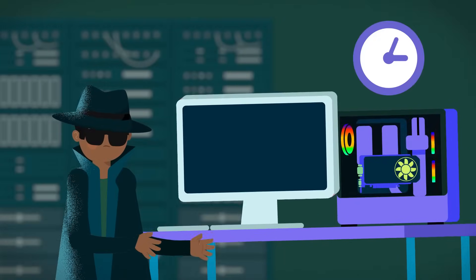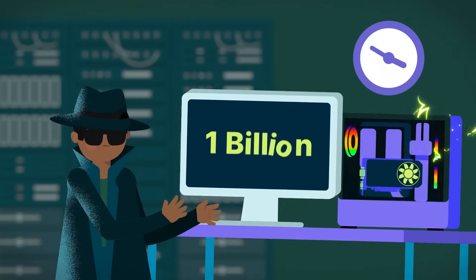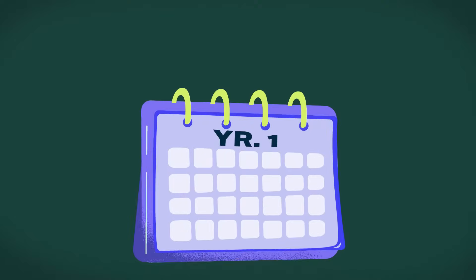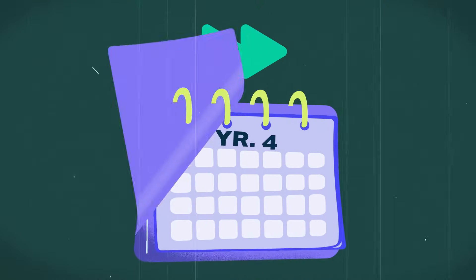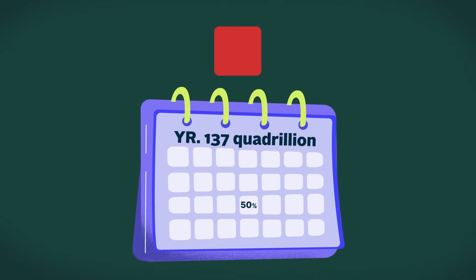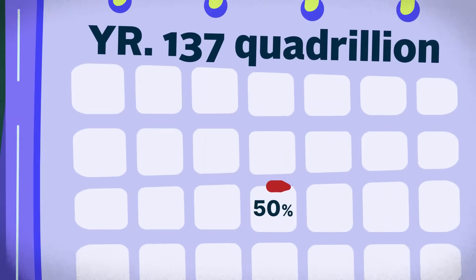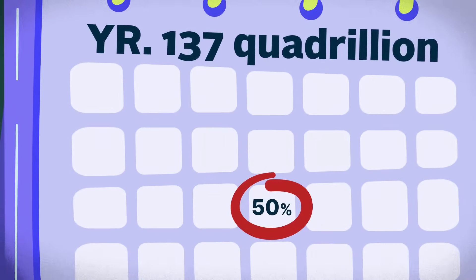However, even if someone has a hypercomputer generating a billion addresses per hour, it would still take them 137 quadrillion or 137 million billion years just to get a 50% chance of bumping into your address.